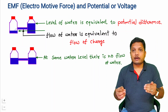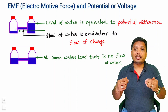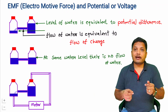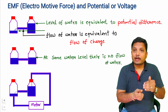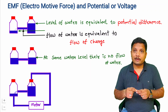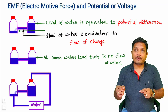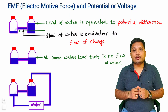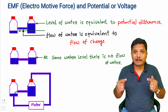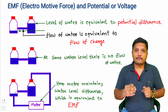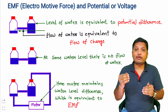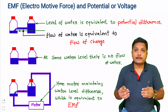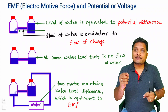Now if you want to have a continuous flow of water, you need to make one arrangement. As shown in the third figure, I am taking water from the lower water level bottle and feeding it to the higher water level bottle using a motor. By using the motor to provide flow from lower to higher, it maintains the water level difference between the two bottles. So water level difference is the potential difference, but to maintain that potential difference you need electromotive force.